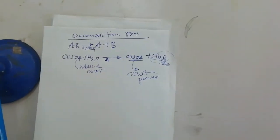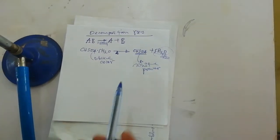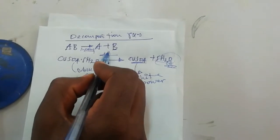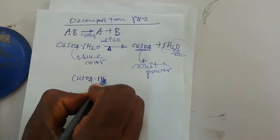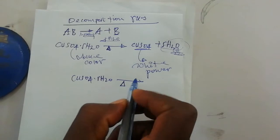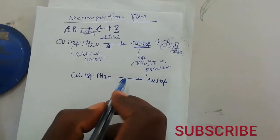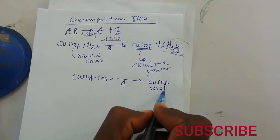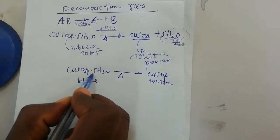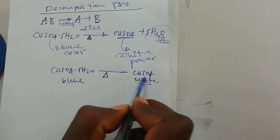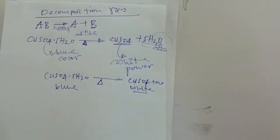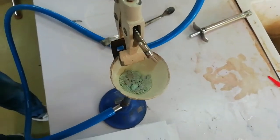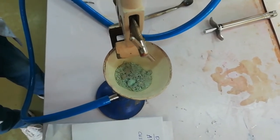We get our new product, which is white powder. Since this is a reversible reaction, when you heat copper sulfate pentahydrate it converts into copper sulfate, which is a white powder, plus water as vapor. If you add some amount of water on this white copper sulfate, it turns back into copper sulfate pentahydrate. This is a reversible reaction.